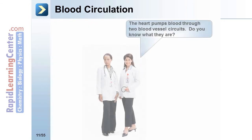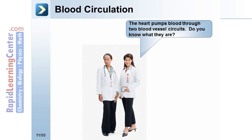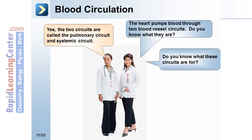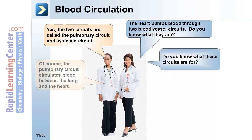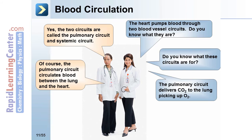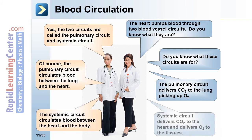The heart pumps blood through two blood vessel circuits: the pulmonary circuit and the systemic circuit. The pulmonary circuit circulates blood between the lungs and the heart, delivering CO2 to the lungs and picking up O2. The systemic circuit circulates blood between the heart and the body, delivering O2 to the tissues and collecting CO2.